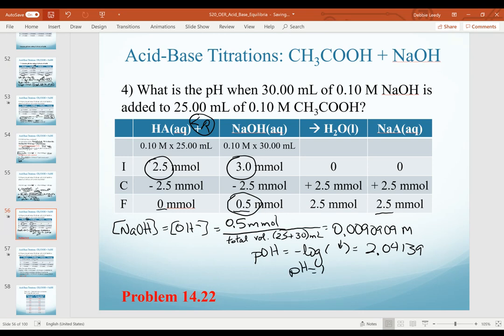And then, of course, pH is going to be 14 minus that value. We would expect a high value because we have excess strong base in solution. And so it makes sense that our final pH is 11.96. Two decimal places here because of two sig figs in concentration.